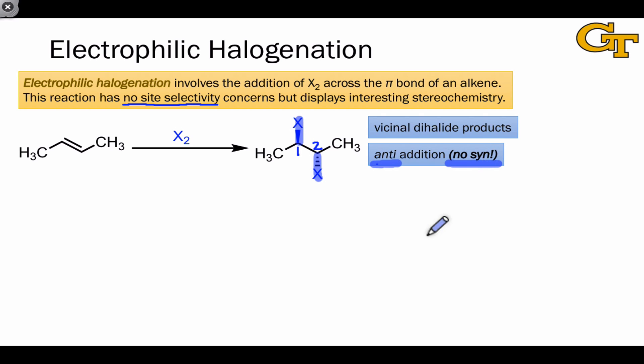This reaction is stereospecific. That means if we use cis-2-butene rather than trans-2-butene in an electrophilic halogenation reaction, we'll arrive at a different diastereomer of the product. The reaction still involves anti-addition, but the configuration at carbon-2 is different.